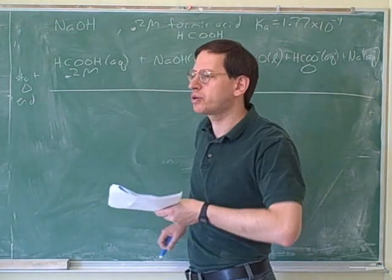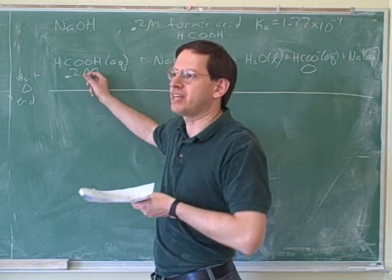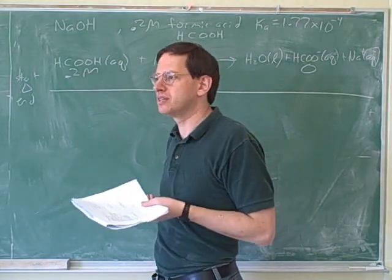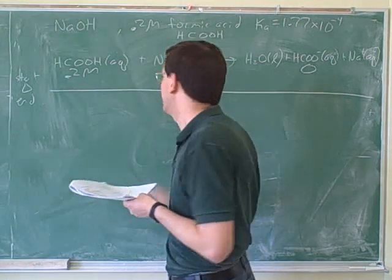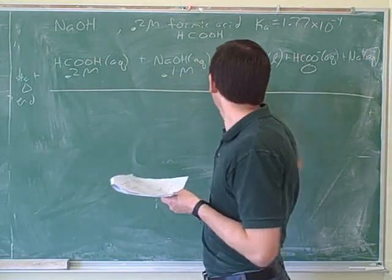Which would be 0.1. By half equivalence point, they mean there is enough base to react with half of the acid. That's what half equivalence point means. Equivalence point is when there's enough base to react with all of the acid. So this would be 0.1. Now what should our changes be?